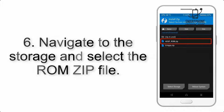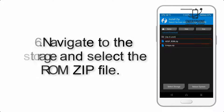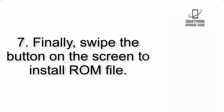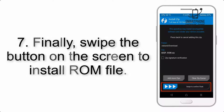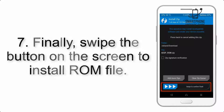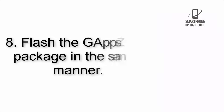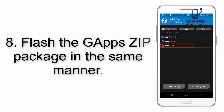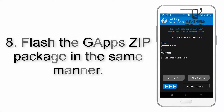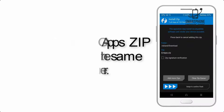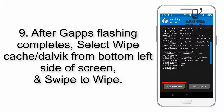Step 6: Navigate to the storage and select the ROM zip file. Step 7: Swipe the button on the screen to install the ROM file. Step 8: Flash the gapps zip package in the same manner.